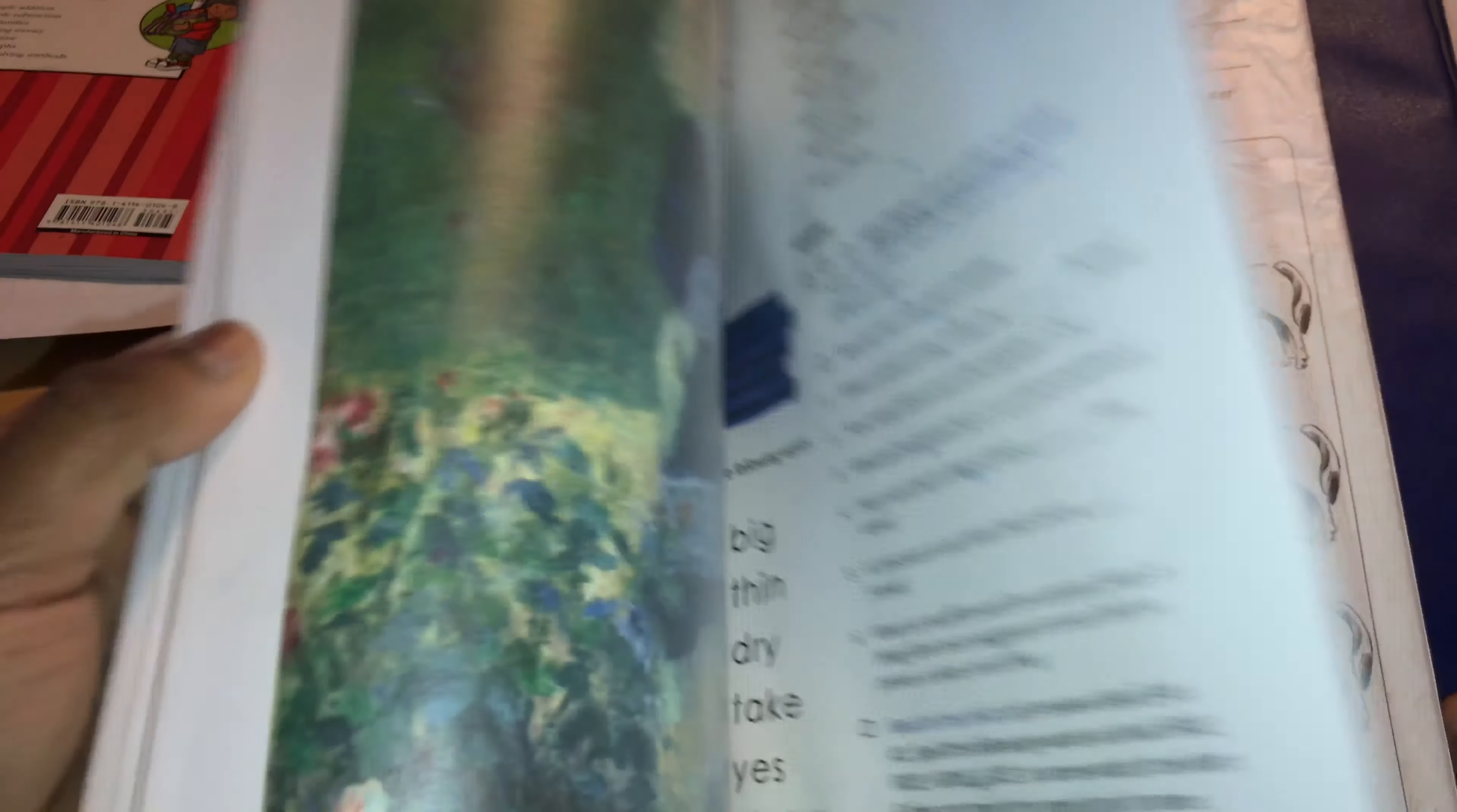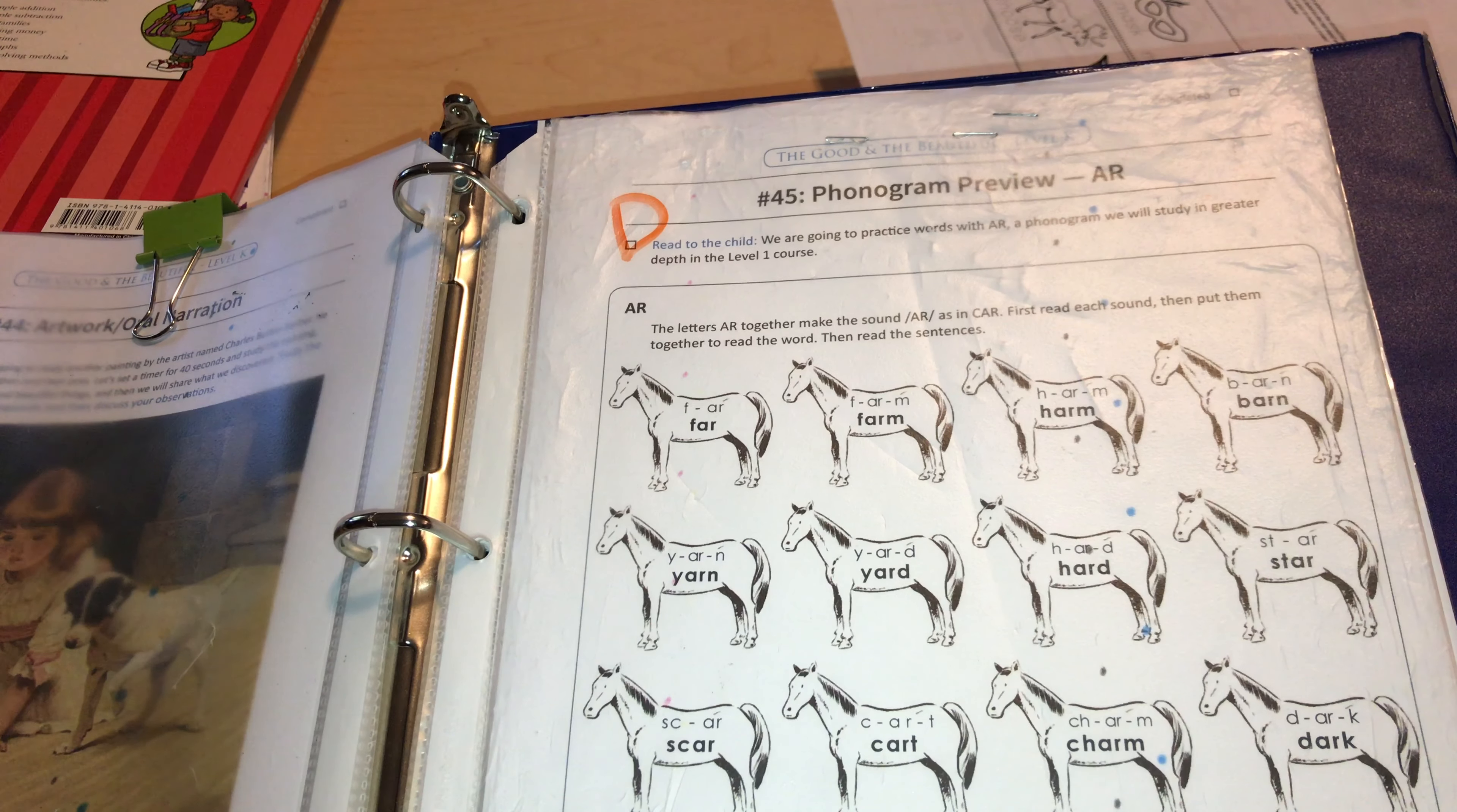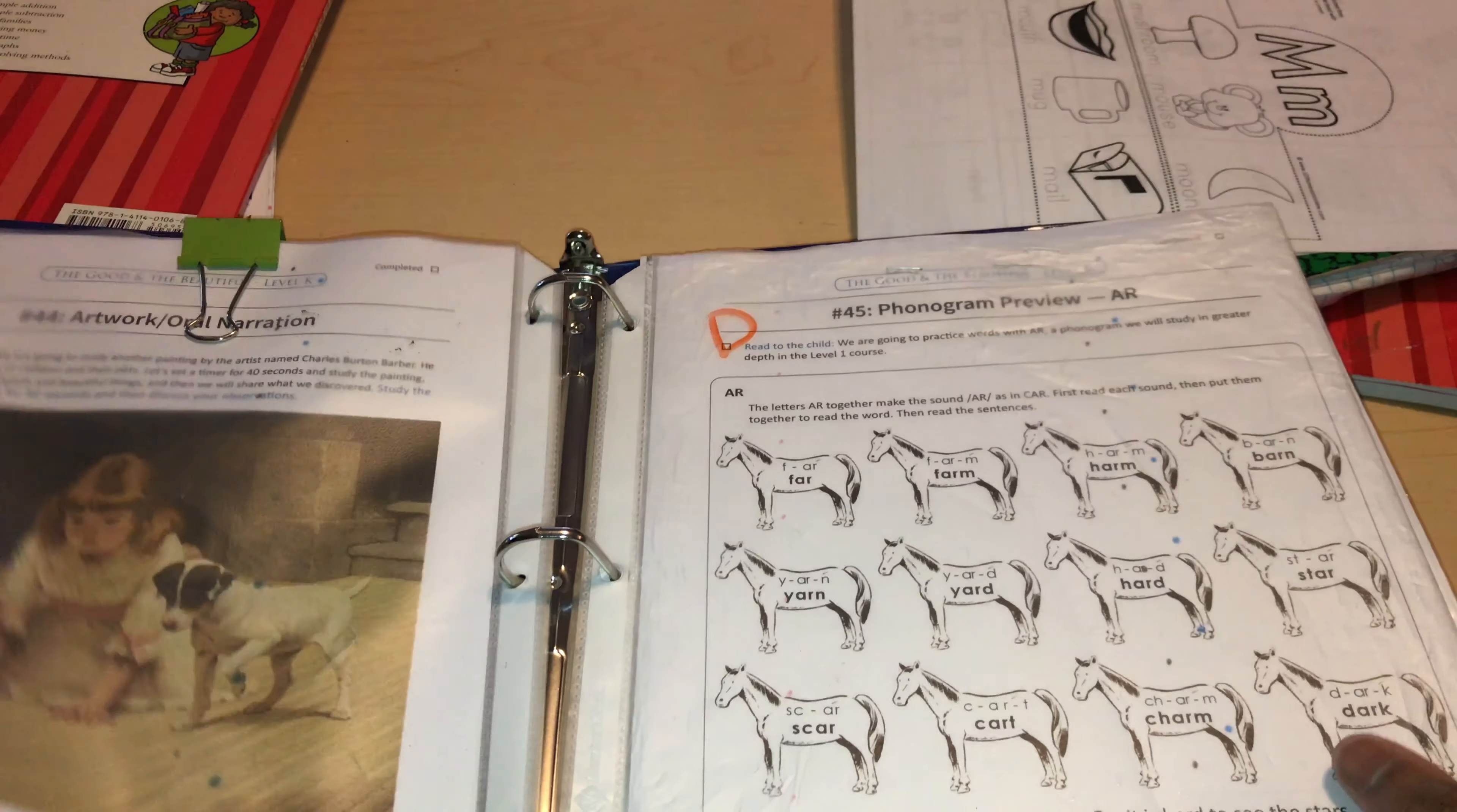For the good and the beautiful, he's almost done. He's in lesson 45. He's actually going to be done this Friday. So next week, when I do this video again for the next week, David is not going to be working on the good and the beautiful anymore. He will be working on another workbook until we start the good and the beautiful level one.